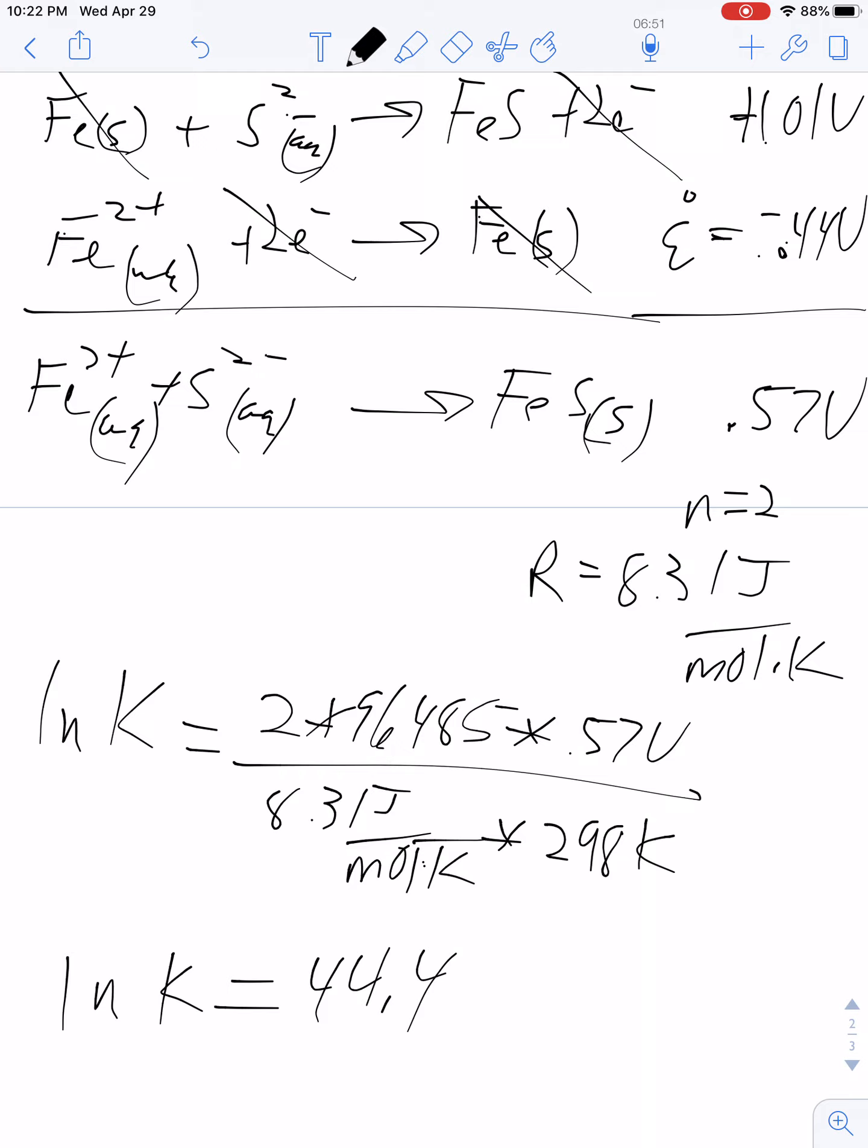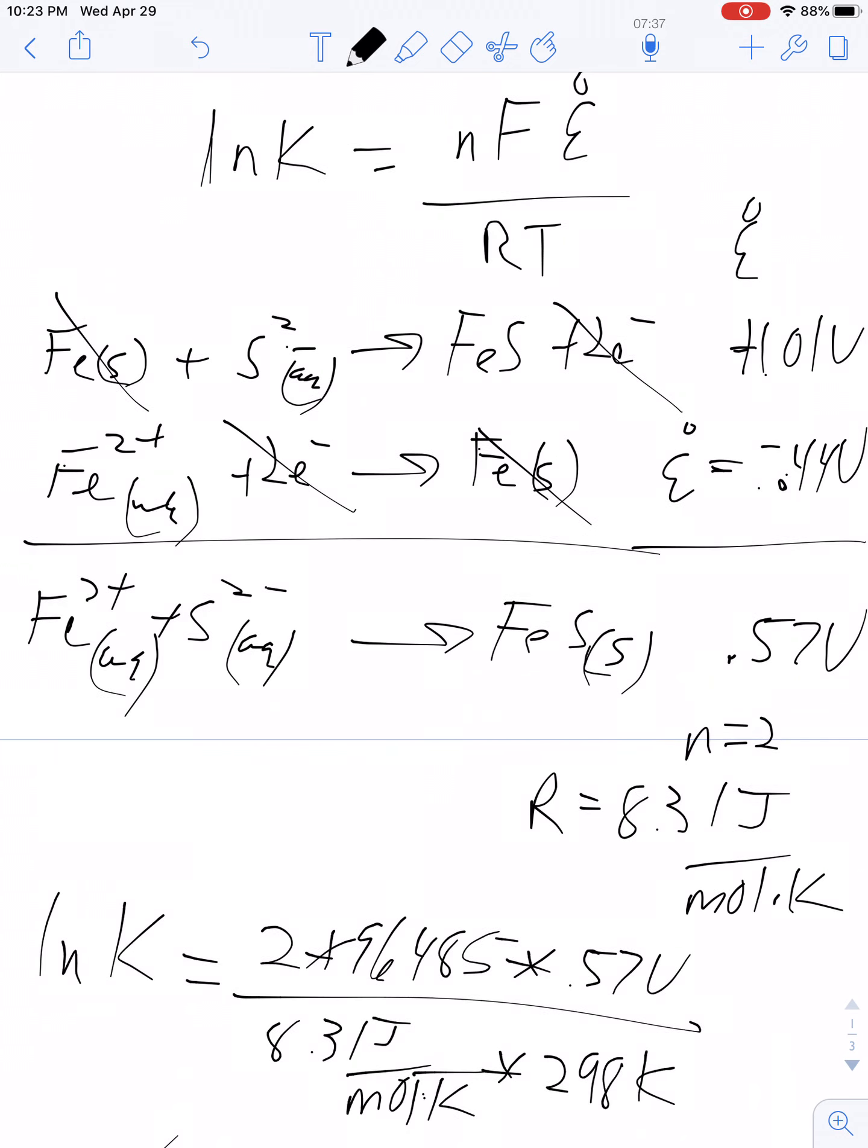Now let's take the exponential of that to find K. You're going to get a big number. So, since K is so big, it basically means that iron sulfide is insoluble.